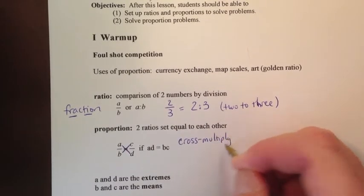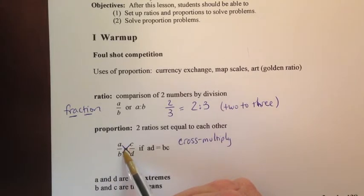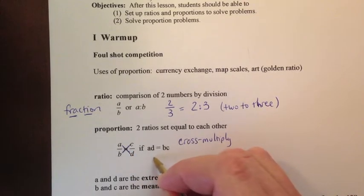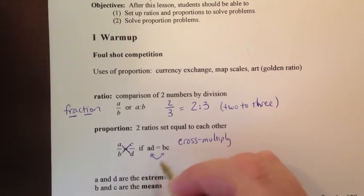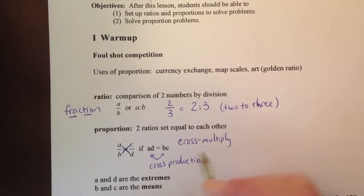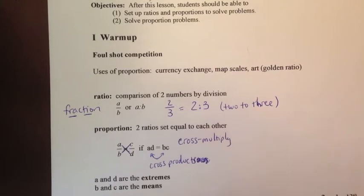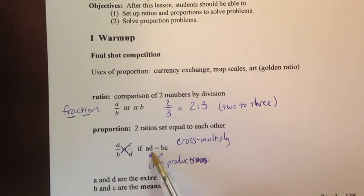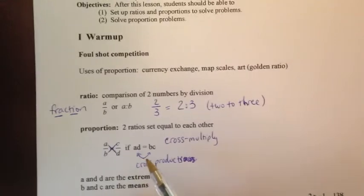And what we call this is we cross-multiply. We draw these lines and they go across each other, kind of like in a diagonal shape. These are called a, d, and b, c are what we call the cross-products. If two fractions are proportional, the cross-products have to be equal.